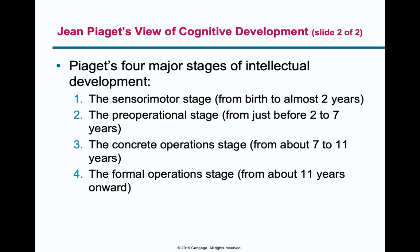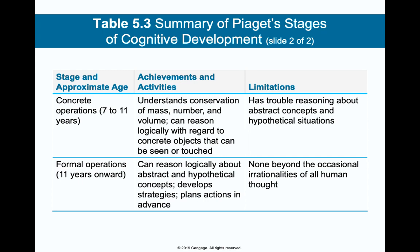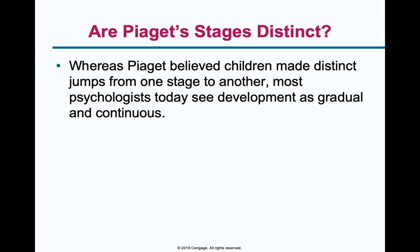In the sensorimotor stage, you have object permanence — a quiz question. You're reacting to stimuli and learning proper responses with a little bit of language, but haven't fully understood object permanence yet. Object permanence is the idea that just because your mother leaves the room doesn't mean she's gone. Pre-operational is when you develop more language and symbolic communication but not yet abstract thinking. Concrete operations, from ages 7 to 11, is when you start using reasoning and logic. Formal operations is when you can really think about abstract concepts — algebra, spatial reasoning — and this develops around age 11.